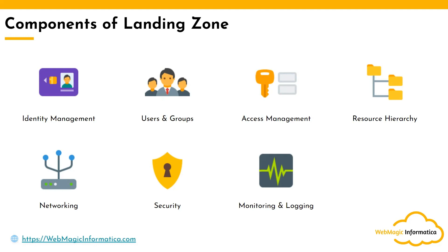Finally comes the automation piece. You don't want to do all these things manually — you will have automation and infrastructure-as-code tools such as Terraform to help you set up all these components. Whenever you want to add new projects or accounts to your landing zone, automation handles the creation of the new account and ensures it has proper networking, security, monitoring and logging, access control — all the landing zone checklist items followed before that account is actually used.